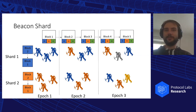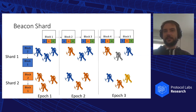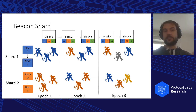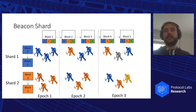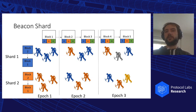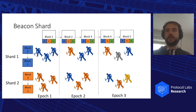In blockchain we have the assumption of honest majority of miners, and we also have to make sure that in every single shard we have honest majority as well. So the beacon shard will generate some randomness and based on this randomness will assign miners to shards in an unpredictable way, and will also periodically migrate miners across shards to compensate for miners joining and leaving the network.